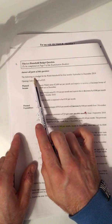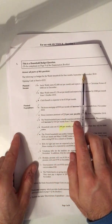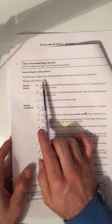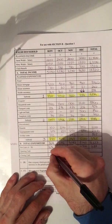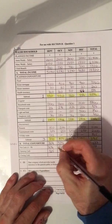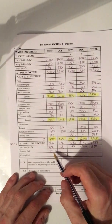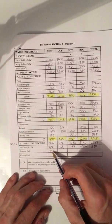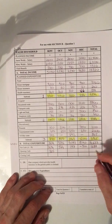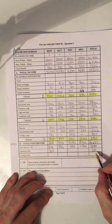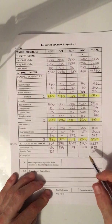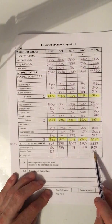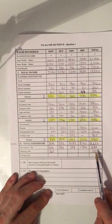This is the 2010 ordinary level Business Studies paper. The question states: opening cash in hand is 325 euro. So when the Walsh household sat down to plan this budget they had 325 euro in hand in September, so we put that figure down for September. We also put 325 down for our total column, because at the time of planning this budget they had 325.